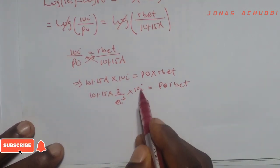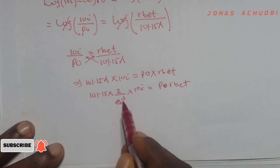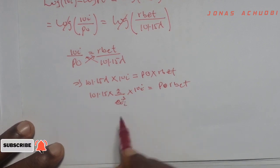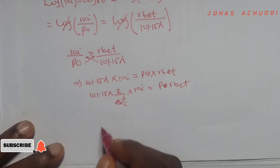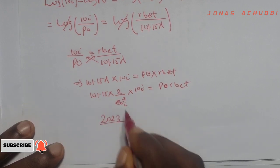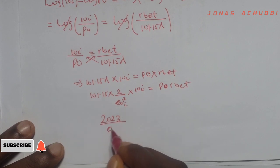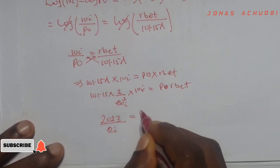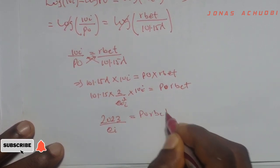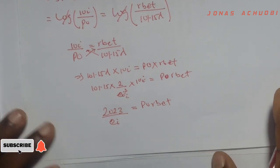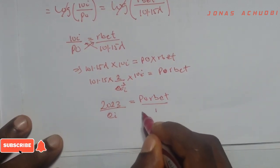So this i here will knock off one of these i's and one will be left. So what we have, we have 101.15 times 2 times 10 is 2023, all over e, and then 1i is left there, equal to porbet.